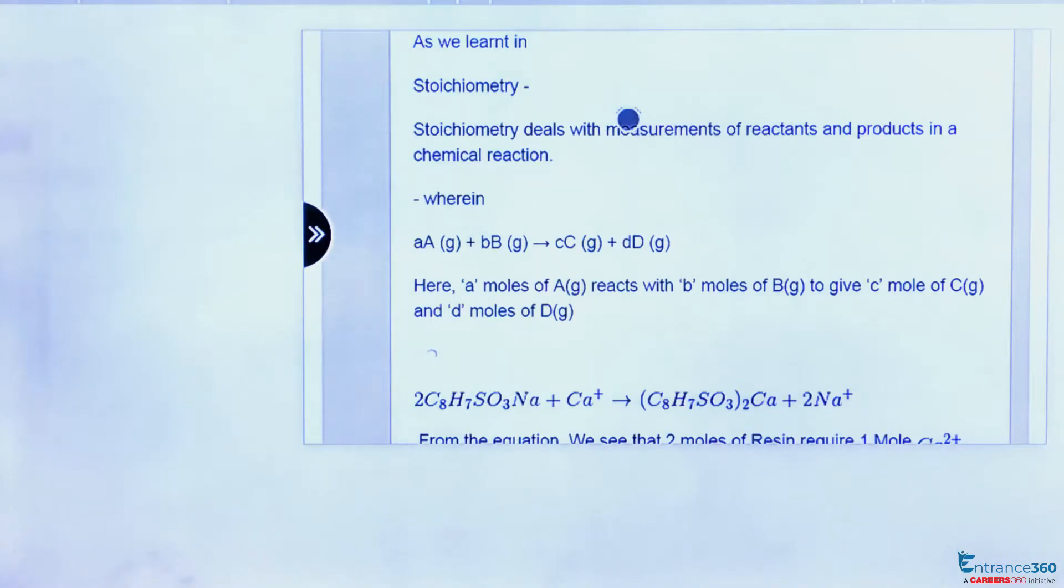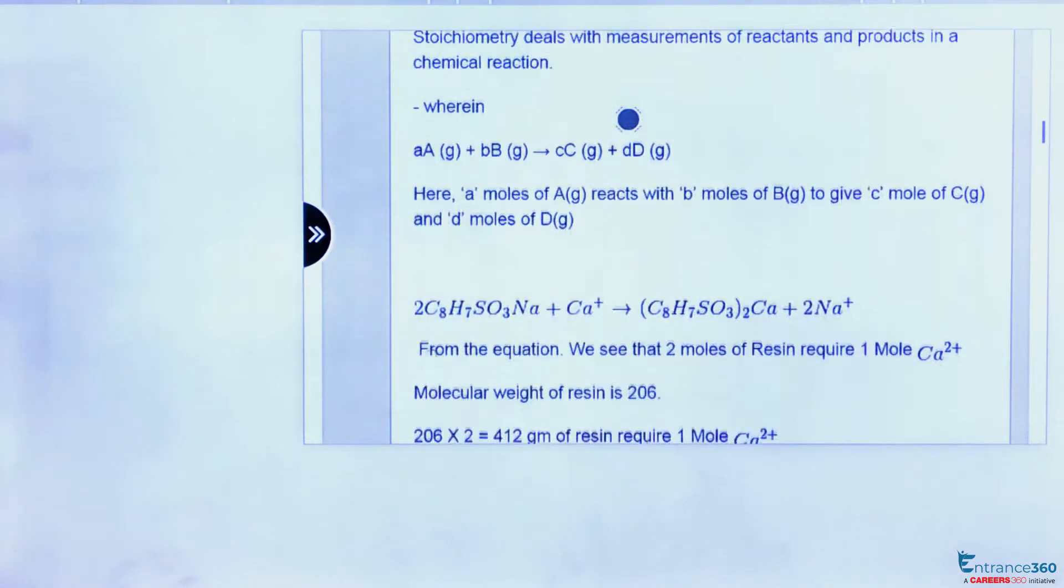As we have learned in stoichiometry, which deals with balancing equations, we know that two moles of resin exchange one mole of calcium ion through this process. This is the reaction you can see between resin and calcium ion.